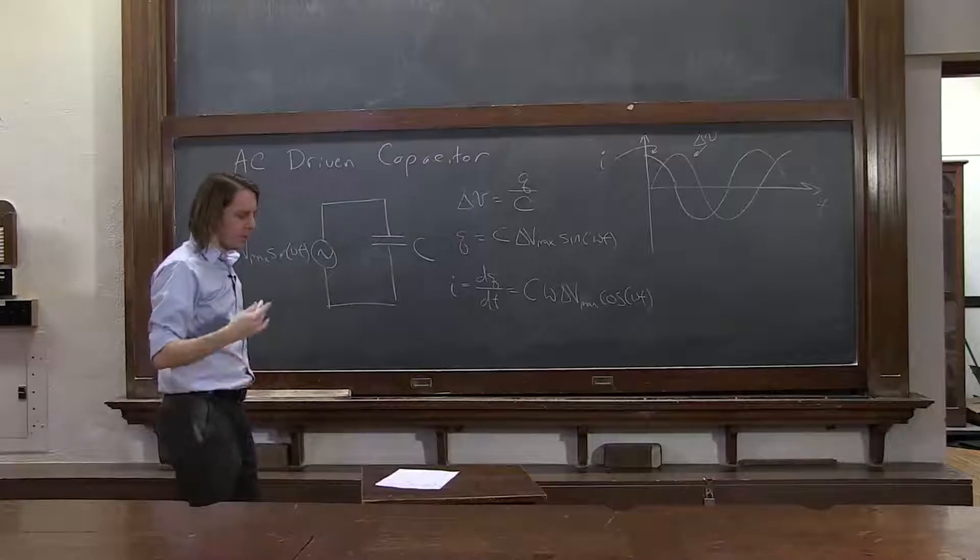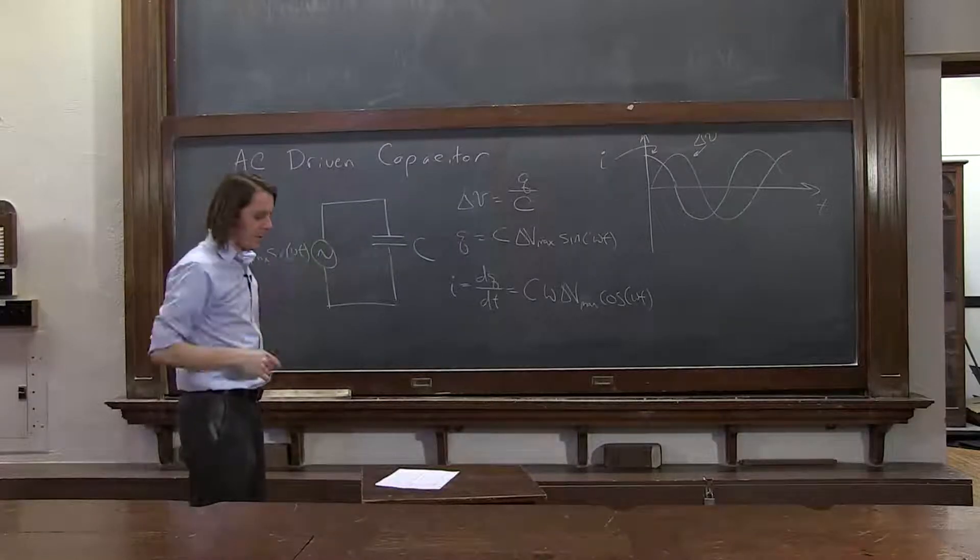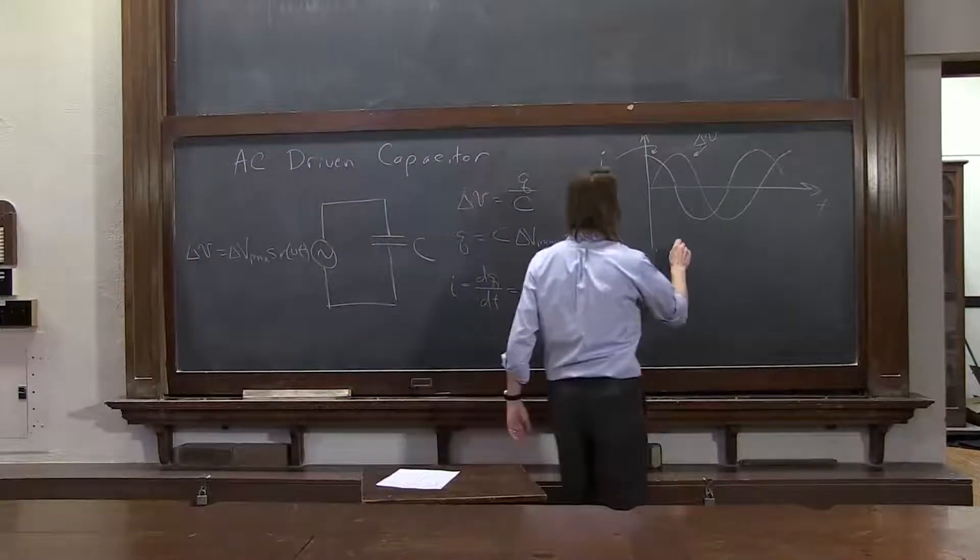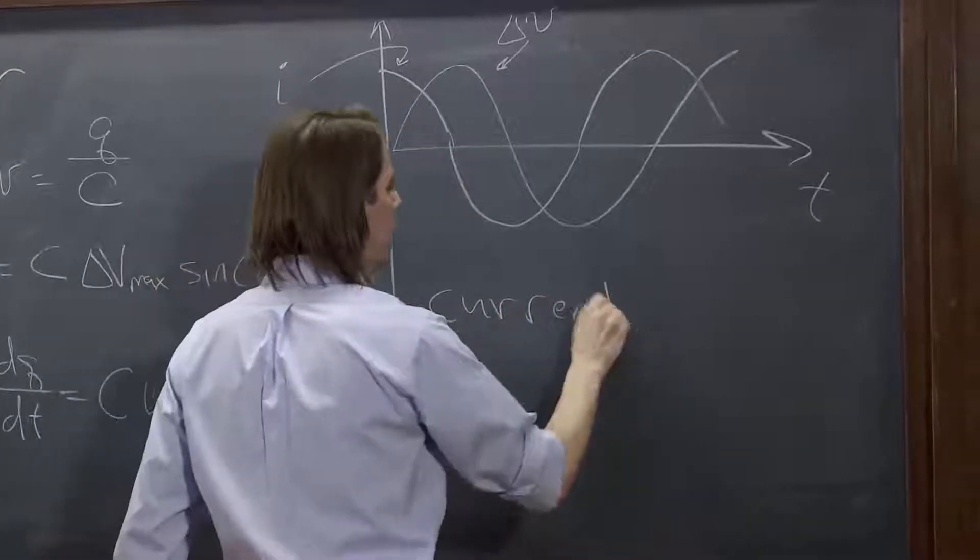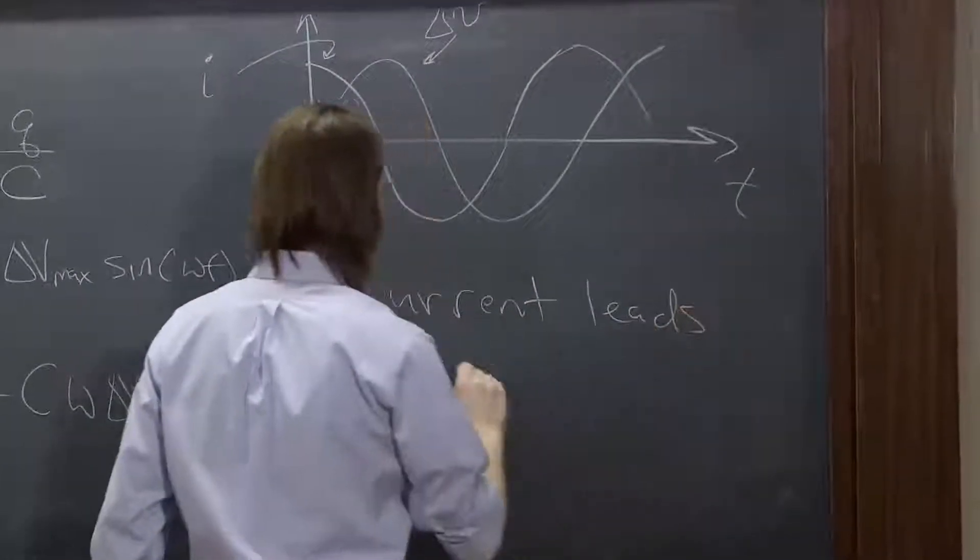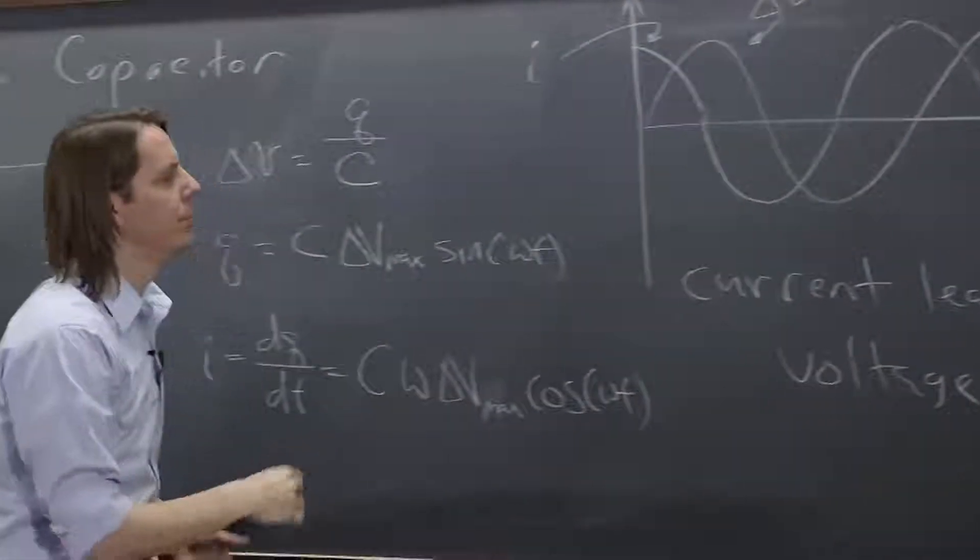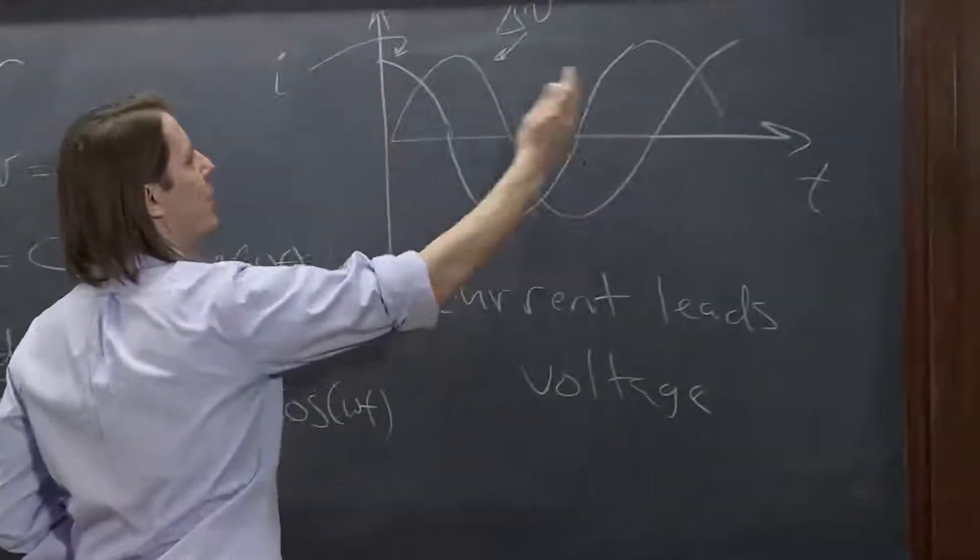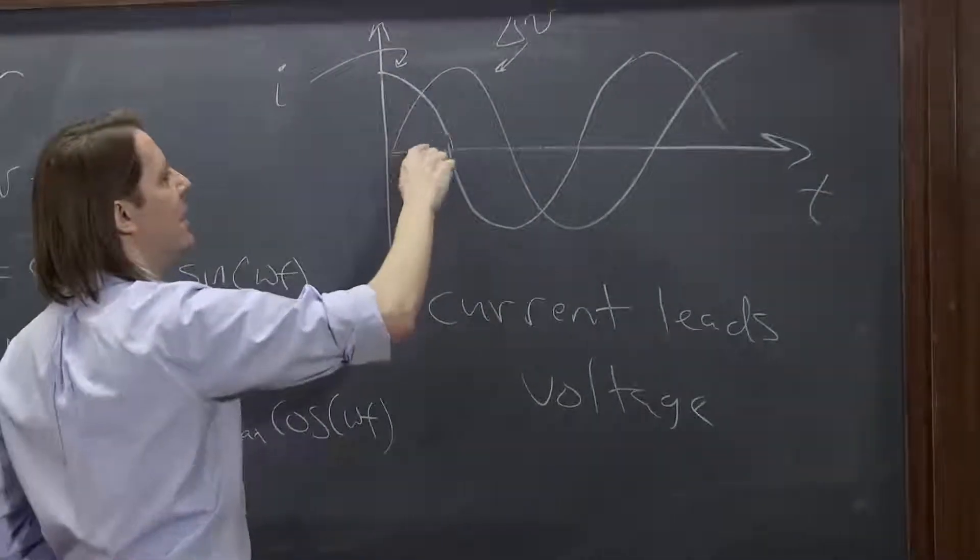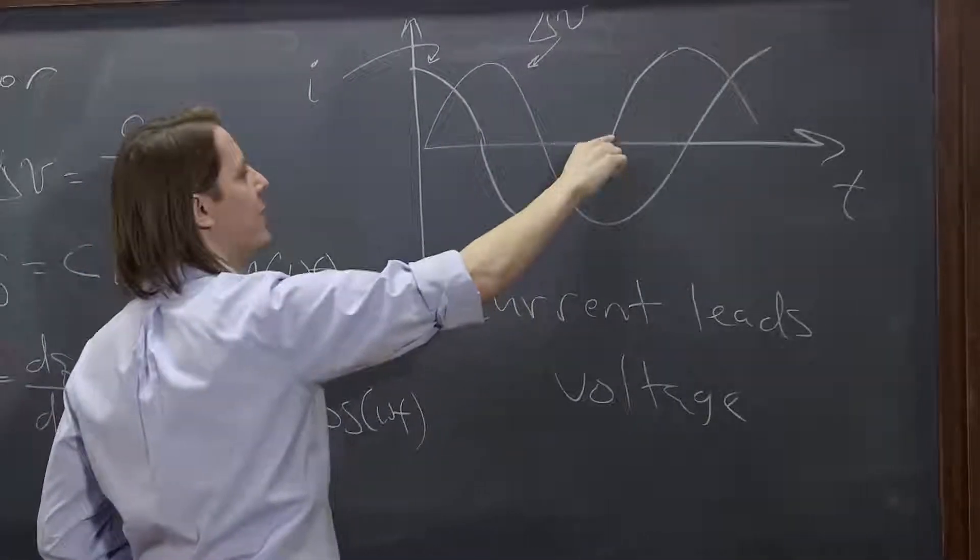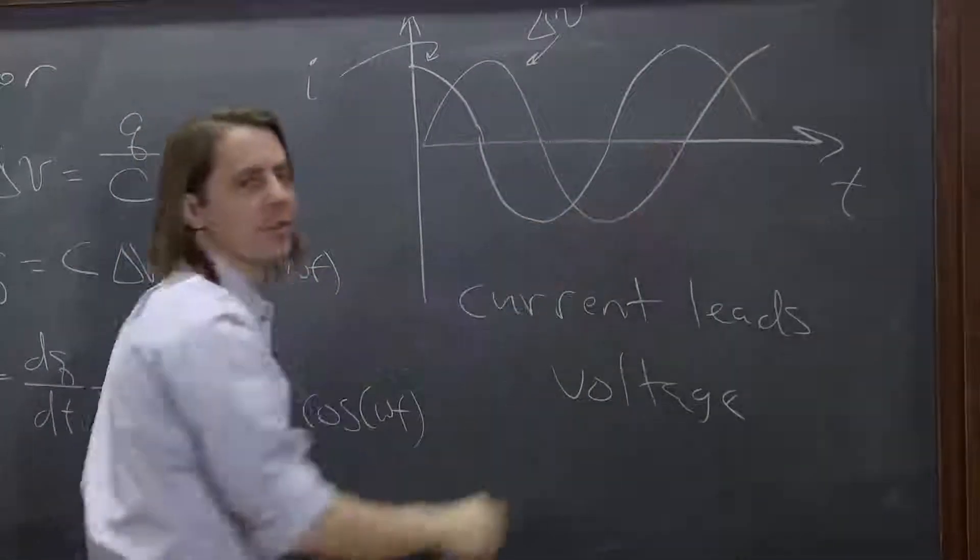So since one is sine and one is cosine, they're out of phase by 90 degrees, and here we get that the current leads the voltage when you have a voltage-driven capacitor. And by that I mean, if we were to watch time go this way, the current has already peaked and coming down, and then the voltage is just starting to peak. And the current has already gotten back to zero, and a little bit later, the voltage gets to zero.